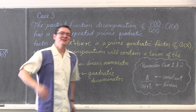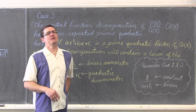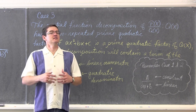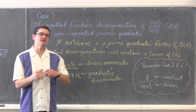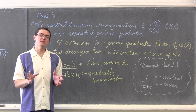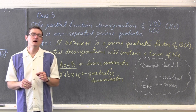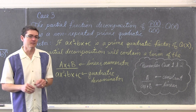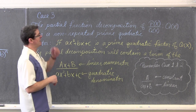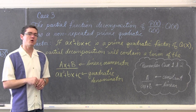BAM! Mr. Tarrou! Take a look at part two of partial fraction decomposition — undoing that addition of algebraic fractions. Remember we can do this when the degree of the numerator is less than the degree of the denominator. We had part one which dealt with the denominator having linear factors. Now what if they are quadratic?